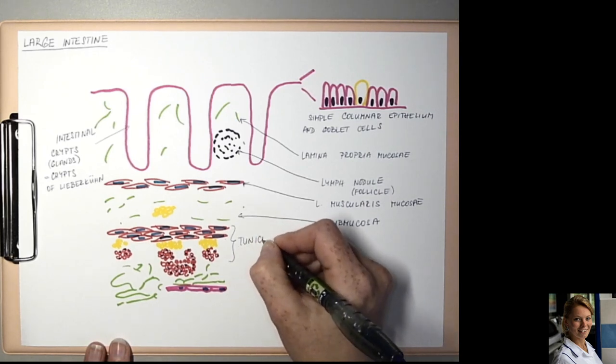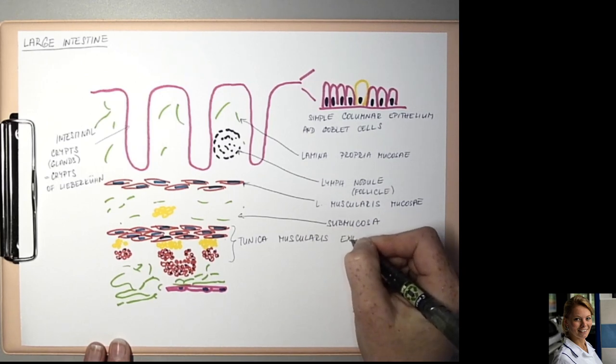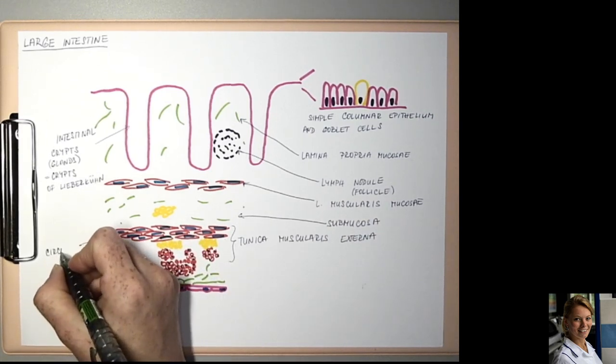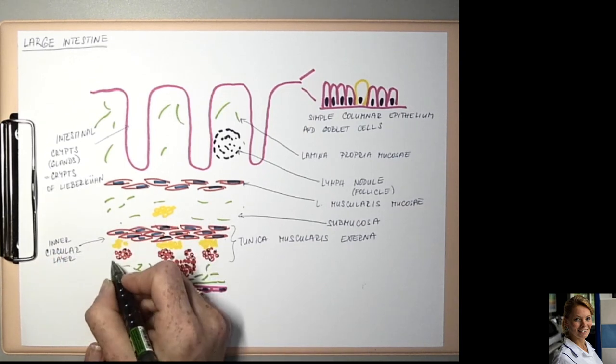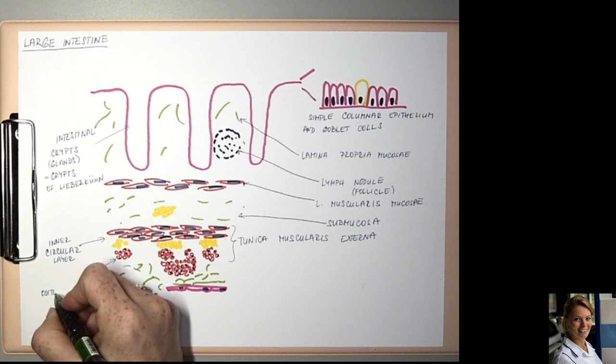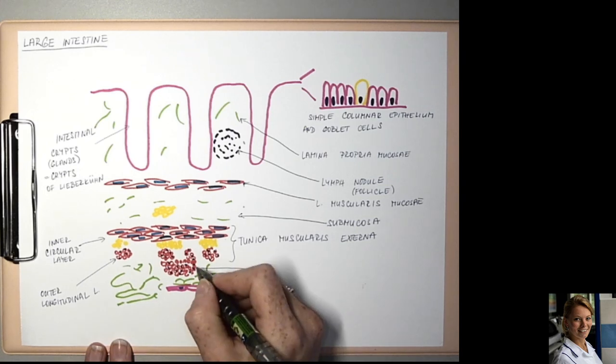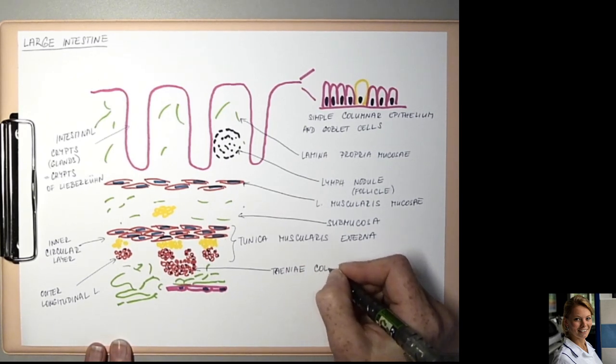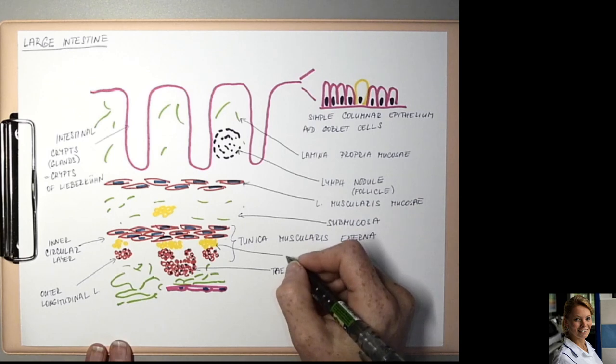Next layer is tunica muscularis externa, inner circular layer, outer longitudinal, inner circular.